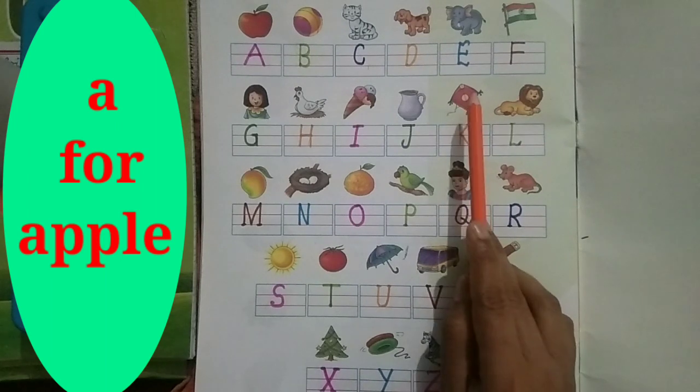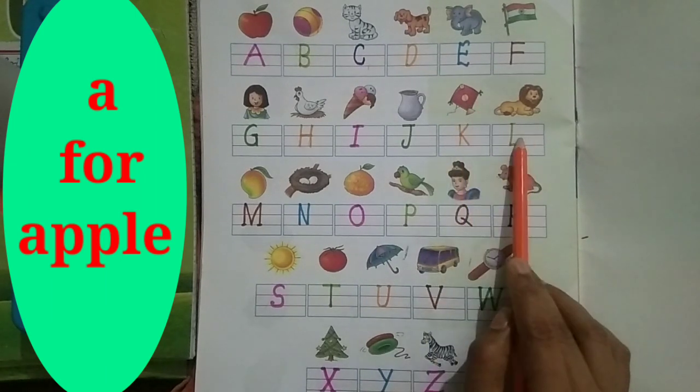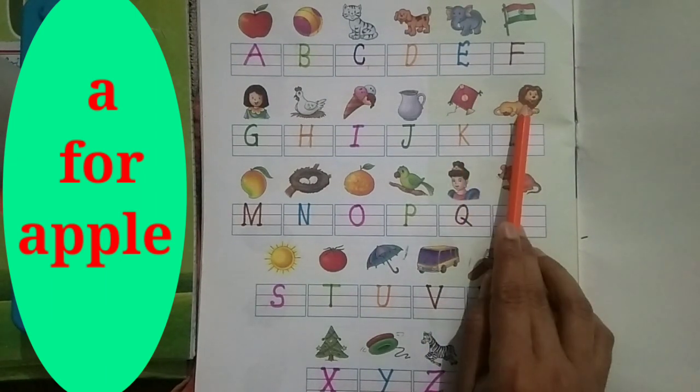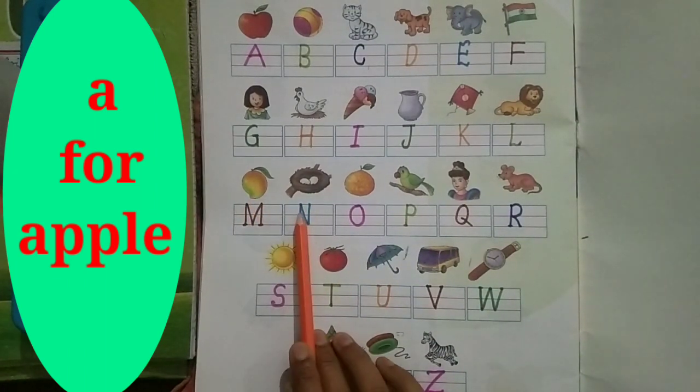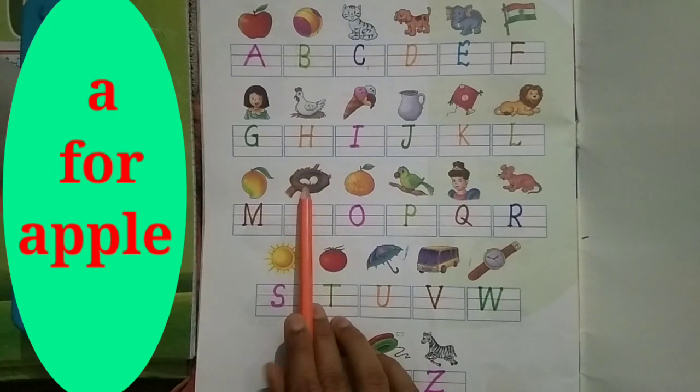K for kite, L for lion, M for mango, N for nest.